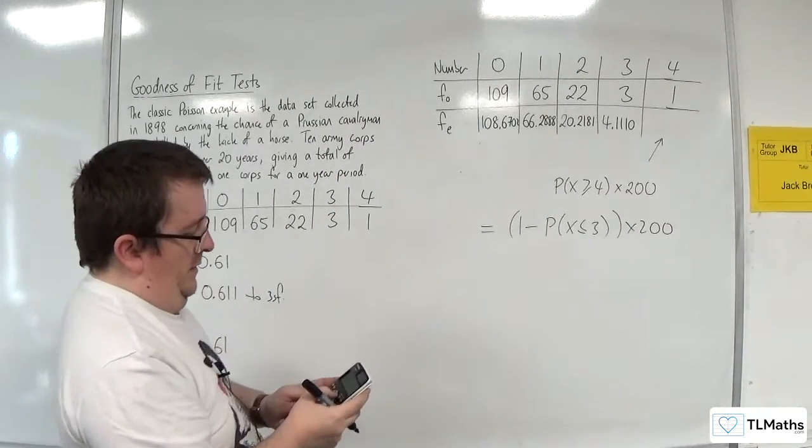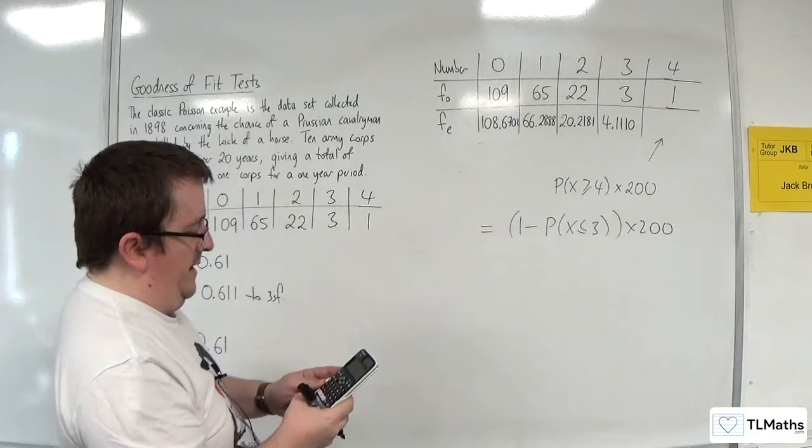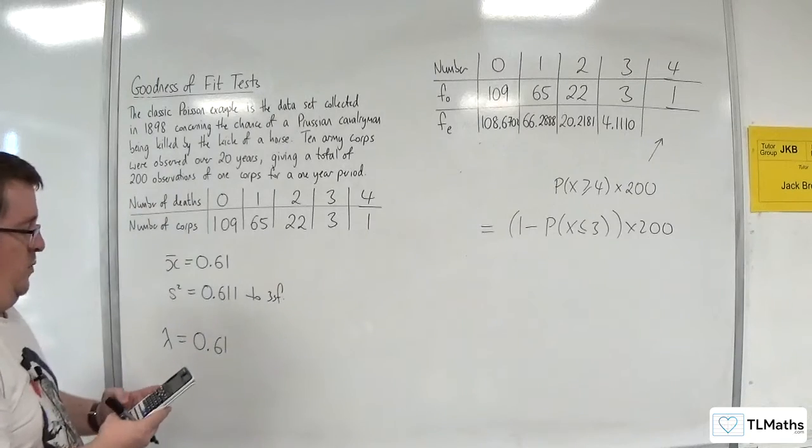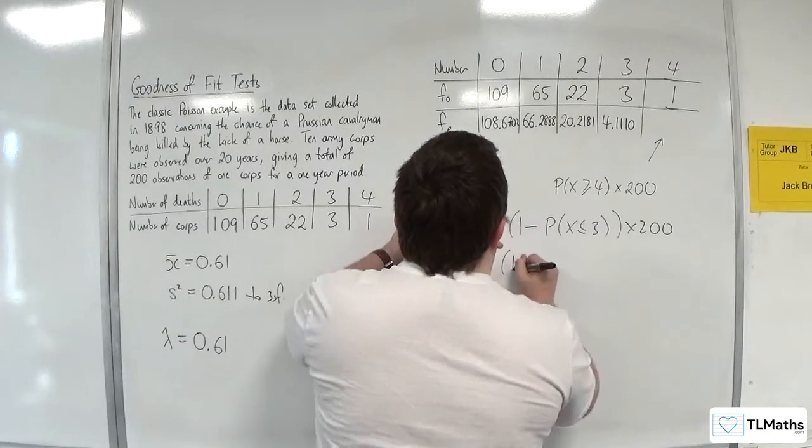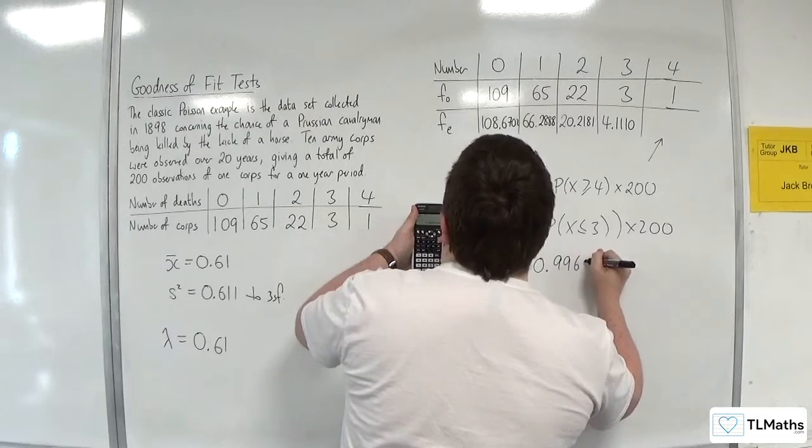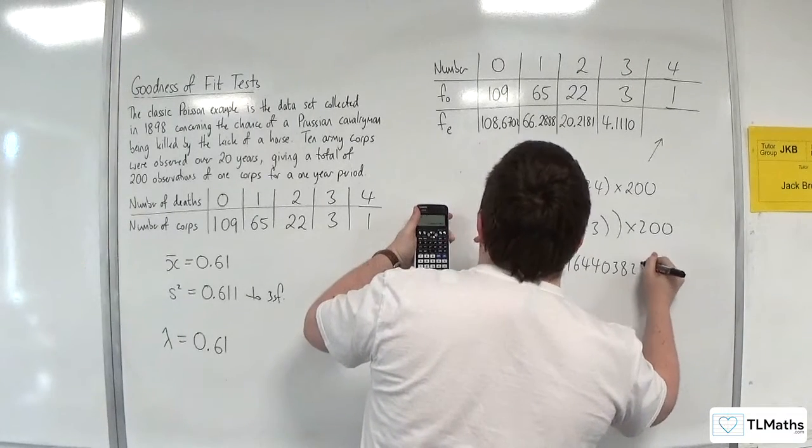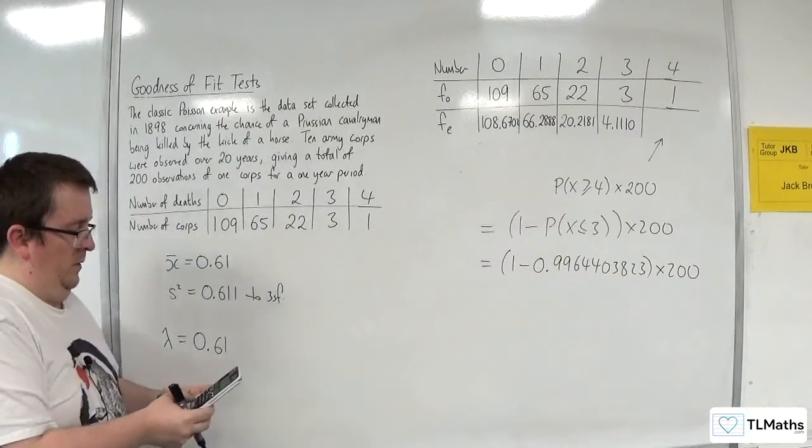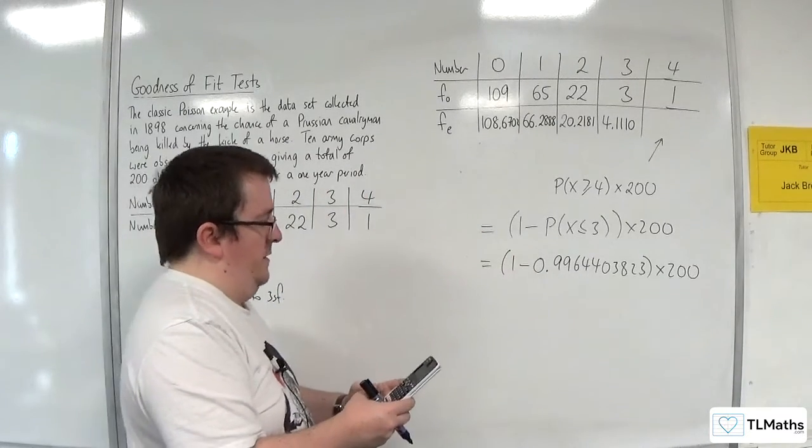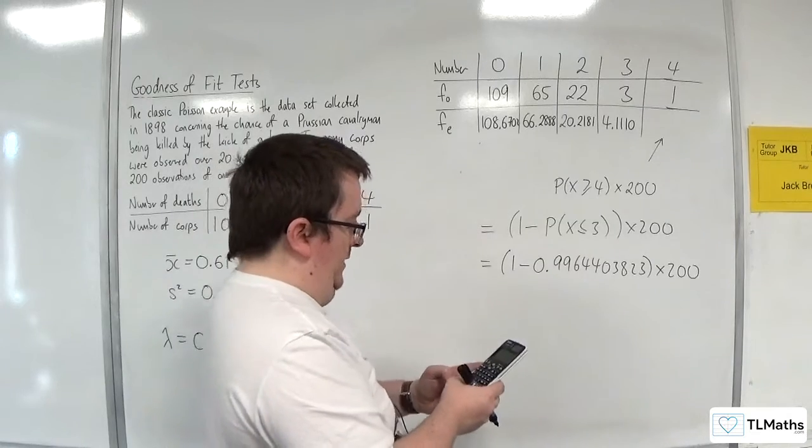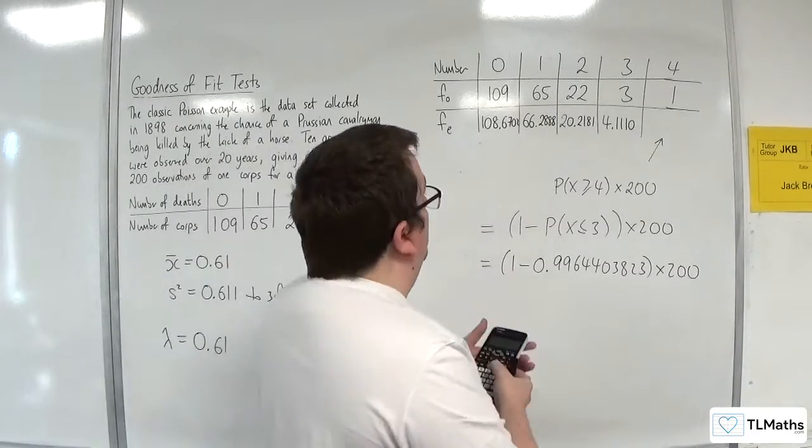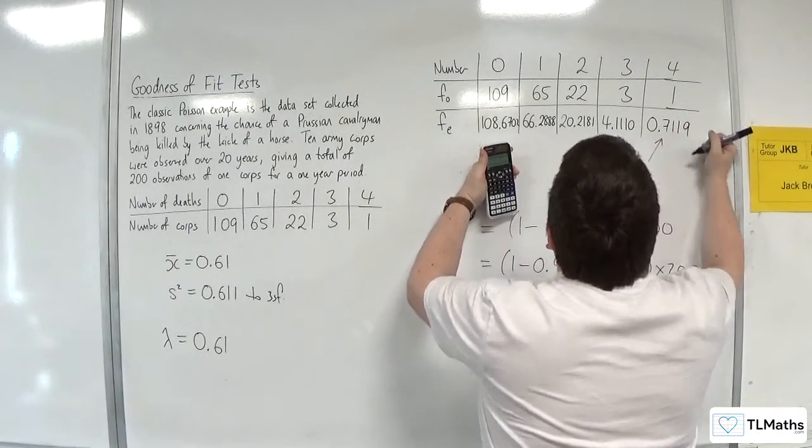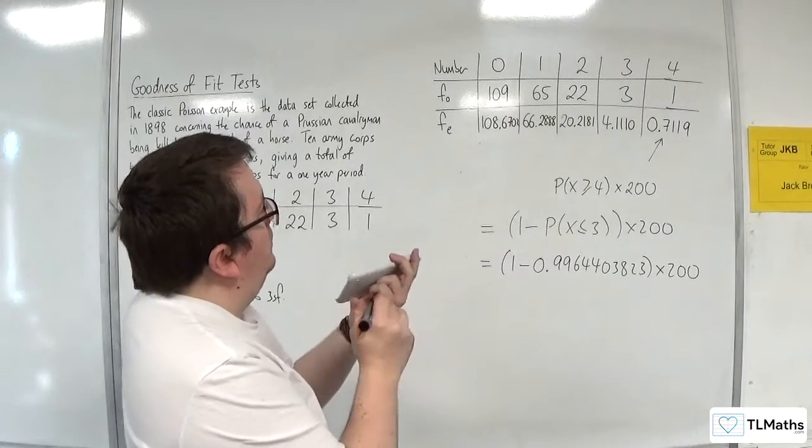So I'm going to have to do probability of X being less than or equal to 3 times by 200. Let's work out what that is using my calculator. I need 3 as X and 0.61 there. So that would be 1 take away 0.9964403823 times that by 200. And I'm getting 0.7119.